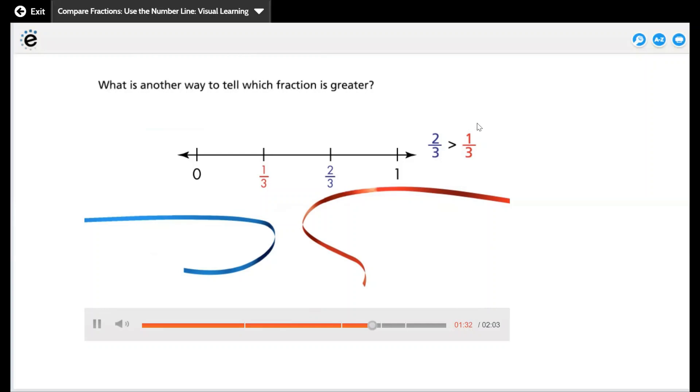What is another way to tell which fraction is greater? So here we have different ways. Because they have same denominator, the one who has greater numerator means greater fraction. When two fractions have the same denominator, the fraction with the greater numerator is the greater fraction.